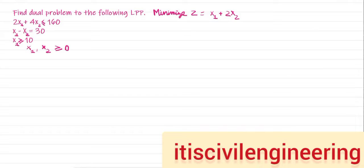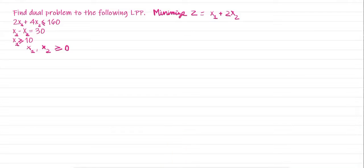In this video, we will see how we can find the dual to the given linear programming problem with the help of one more example. I have already taught one example in my previous video on how we can write the dual to the given linear programming problem. If you have not watched that, I suggest you watch that first and then watch this.